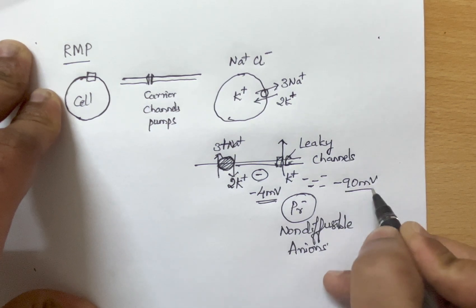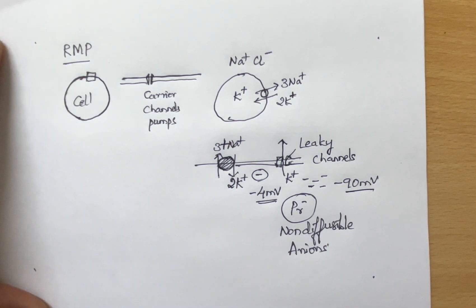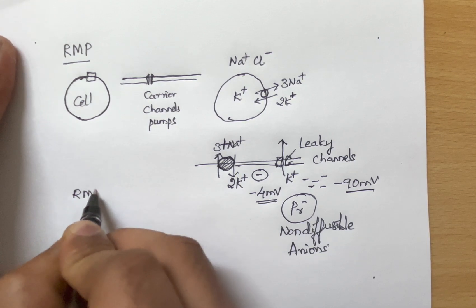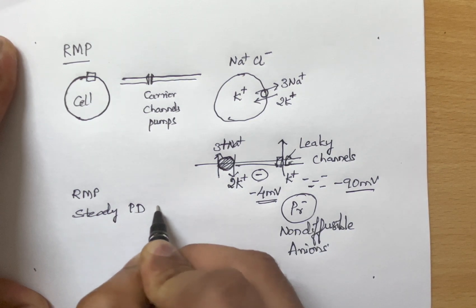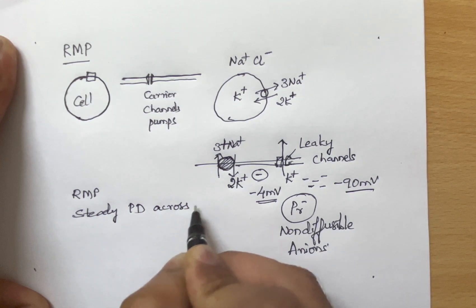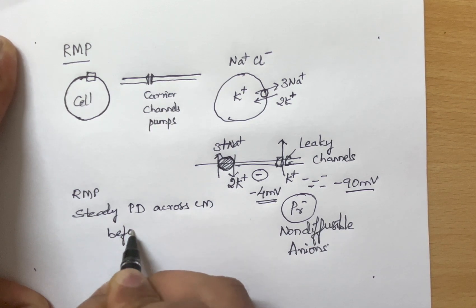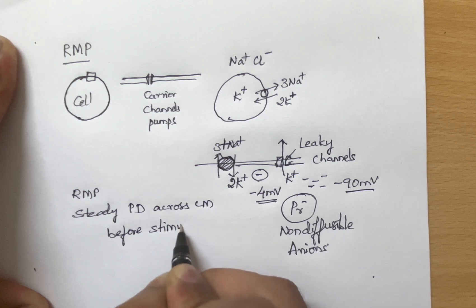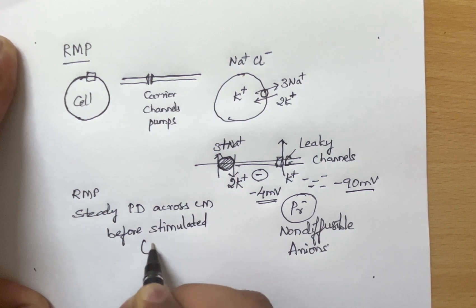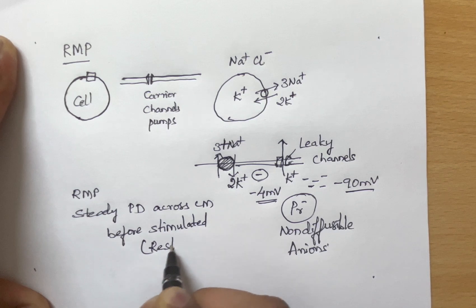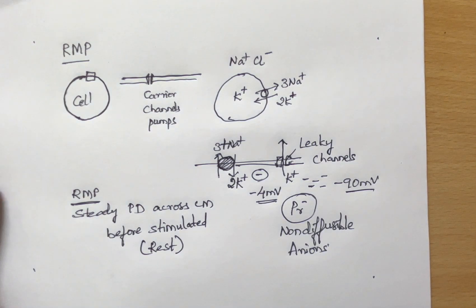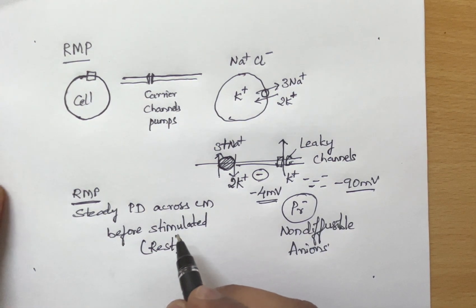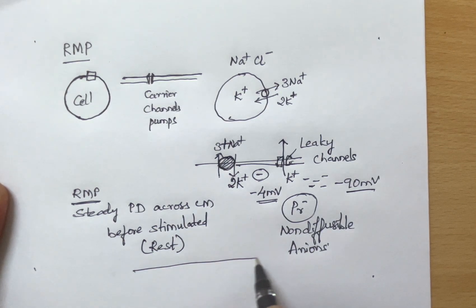Because of the continuous leakage through potassium channels, the cell membrane interior becomes more and more negative — it can go up to minus 90 millivolts. The resting membrane potential is a constant or steady potential difference across the cell membrane before the cell is stimulated with any sort of stimulus.